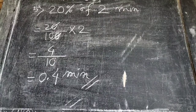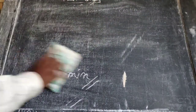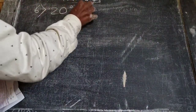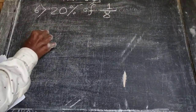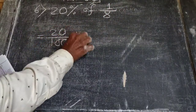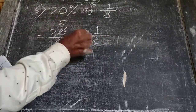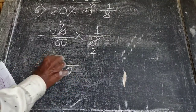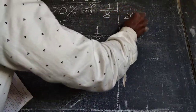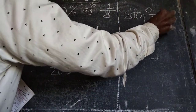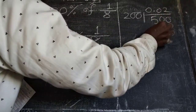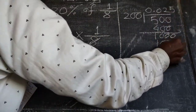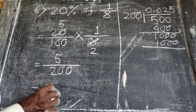Next, (6) 20 percent of 1 by 8: we write 20 by 100 into 1 by 8. After cancelling by 4, we get 5 by 2 into 1 by 8. Multiplying gives 5 by 16. Dividing, this equals 0.025.